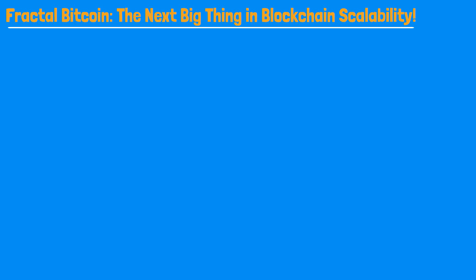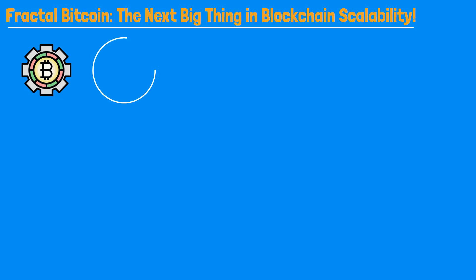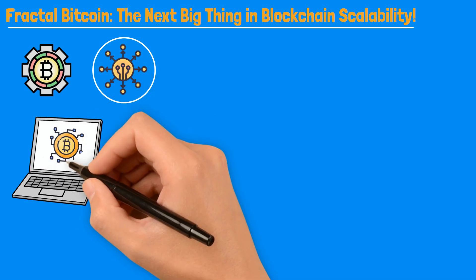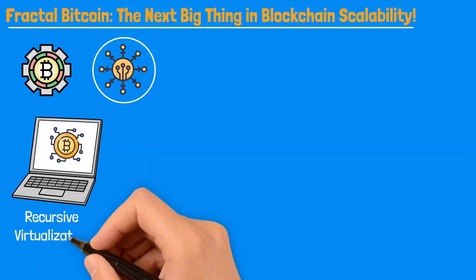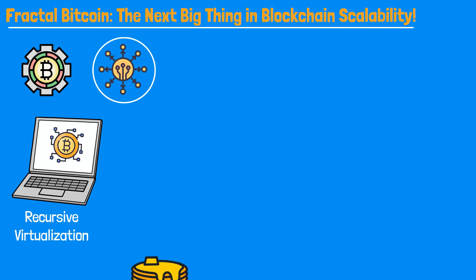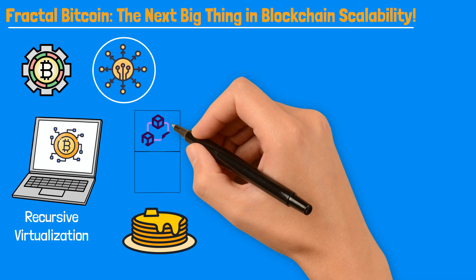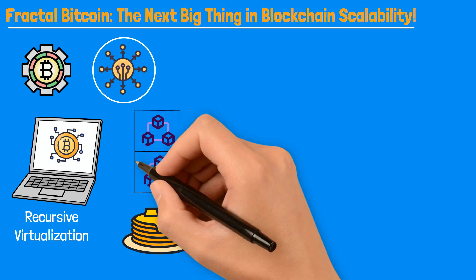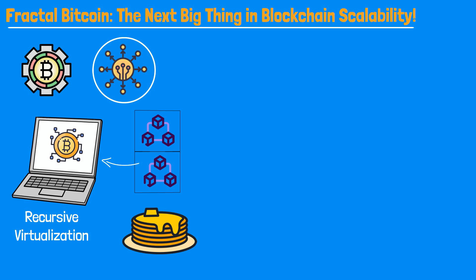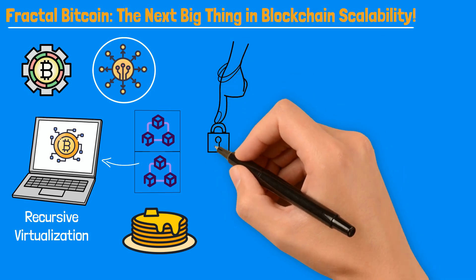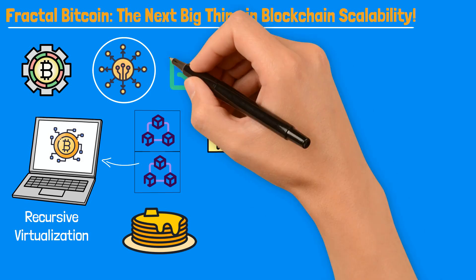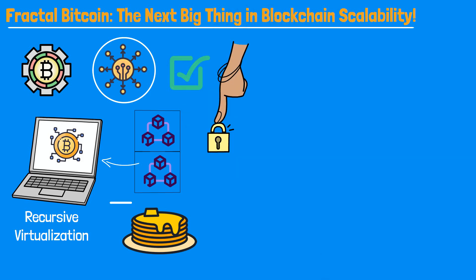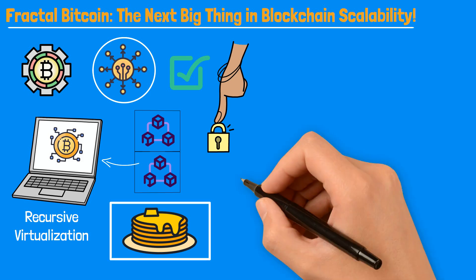Fractal Bitcoin — the next big thing in blockchain scalability. Let's dive into the wild world of Fractal Bitcoin, where the magic of scalability meets the solid foundation of Bitcoin core. Imagine a supercharged version of Bitcoin that utilizes a trick called recursive virtualization — think of it as stacking layers of pancakes, where each pancake is an independent mini-blockchain that still connects to the main Bitcoin network. This design means all the security and consensus you love about Bitcoin stays perfectly intact, like a pancake stack that doesn't topple over no matter how high you go.